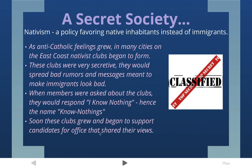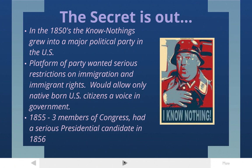Soon these clubs grew and began to support candidates for office who shared their views, trying to get nativists into government. As the clubs became well known and the secret was out, they adopted "Know Nothings" as the name of their political party. They became a major political party supporting candidates for office. Their platform called for serious restrictions on immigration and immigrant rights, and they would only allow native U.S. citizens to vote. The party got so big that Know Nothings were elected to Congress, they had a serious presidential candidate, and many local officials — including the governor of Massachusetts and many city mayors — were Know Nothings, mostly in the north and east coast.